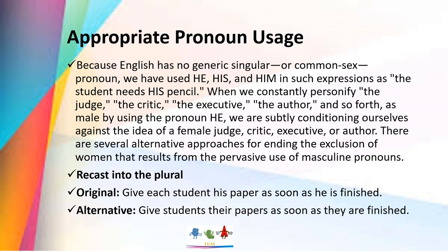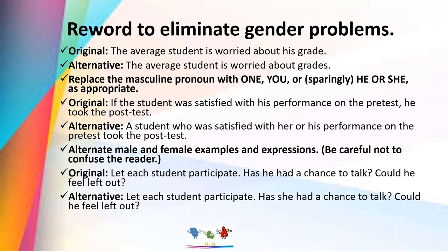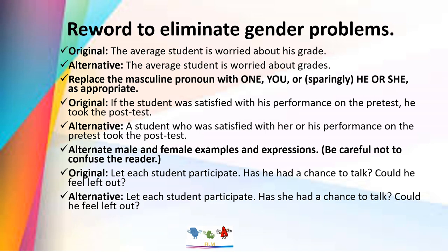There are several alternative approaches for ending the exclusion of women that results from the pervasive use of masculine pronouns. Change into pronoun plural — for example, instead of 'Give each student his paper as soon as he is finished,' use 'Give students their papers as soon as they are finished.' Reword to eliminate other problems — instead of 'The average student is worried about his grade,' use 'The average student is worried about grades.' Replace the masculine pronoun with 'one,' 'you,' or 'he or she' as appropriate — for example, 'If the student was satisfied with his performance in the pretest, he took the post-test' becomes 'A student who was satisfied with his or her performance in the pretest took the post-test.'